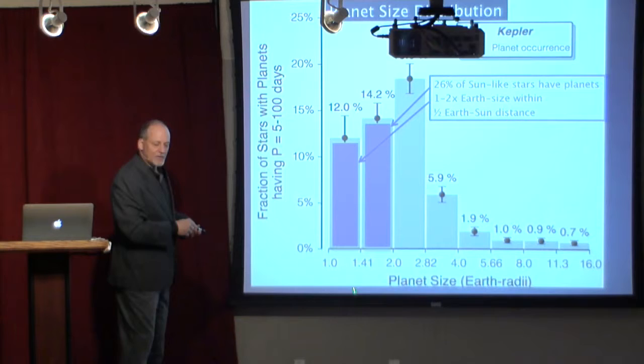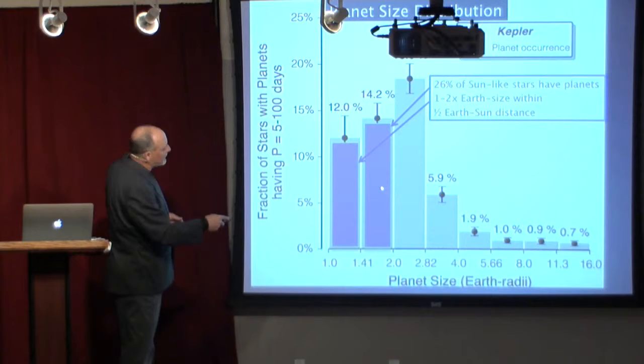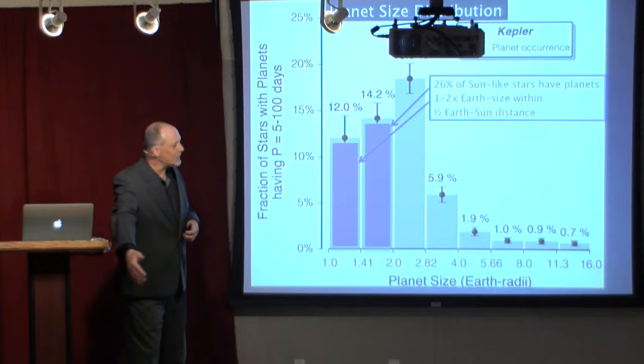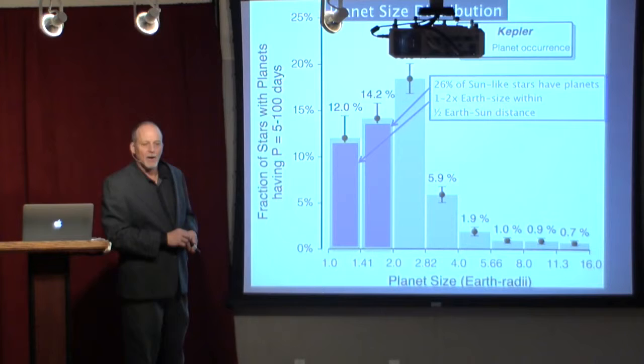This highlights that same point. In blue are the two domains in the histogram between the size of the Earth and twice the size of the Earth. If you add up these numbers, 12% and 14%, you see that some 26% of sun-like stars have a planet between the size of the Earth and twice the size of the Earth in distant orbital distances comparable to that of the Earth.